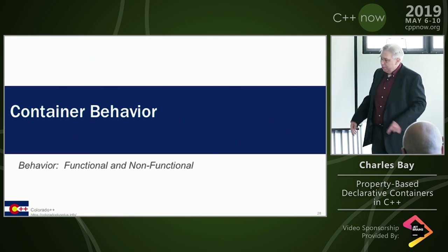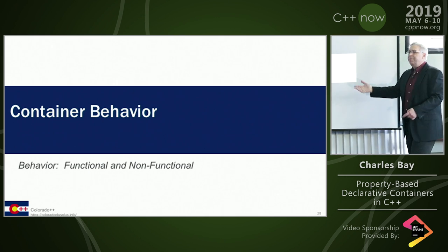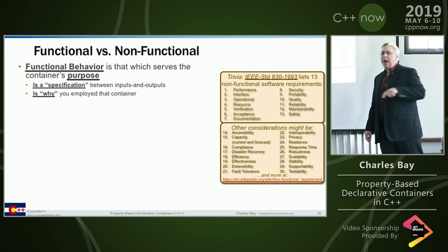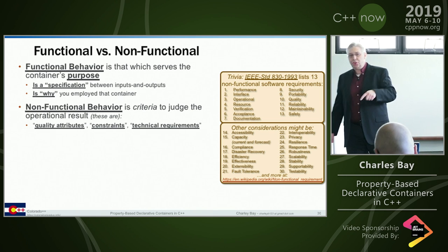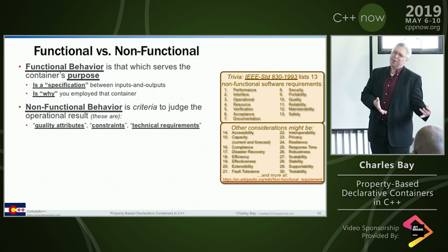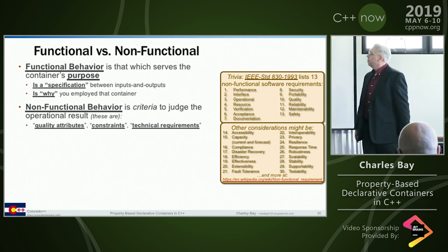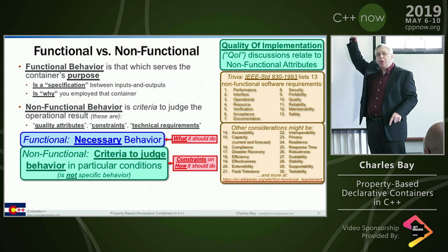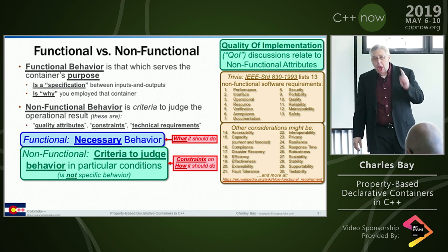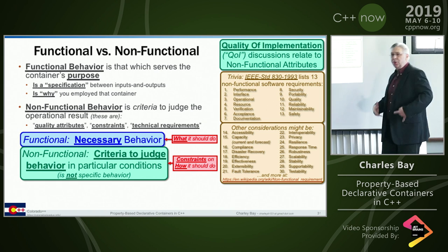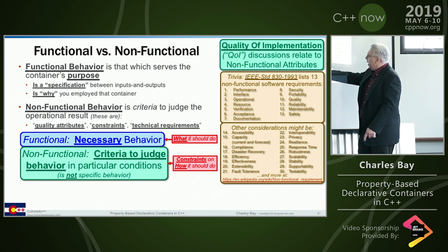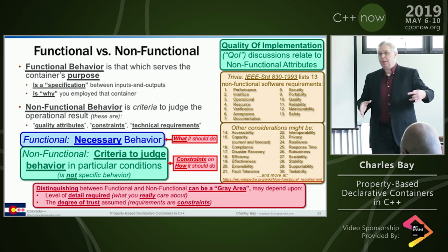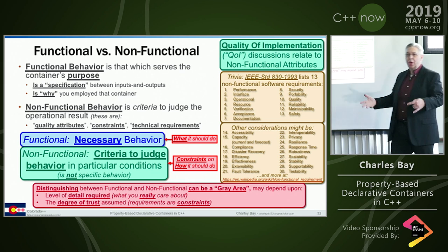So, behavior and containers: you'll have functional - getting stuff in and out - and non-functional, where there's Big O performance penalties based on decisions made. The functional behavior is why you have it; the non-functional is criteria to judge. Based on technical constraints, this container is going to be suitable or not for my application. When we argue about quality of implementation issues, those are non-functional arguments - technical constraints related to implementation. Ideally, you'd constrain design based on functional need and handle reality through non-functional criteria.